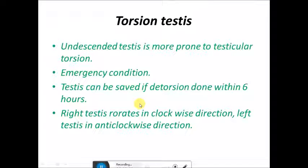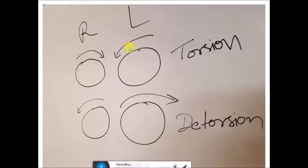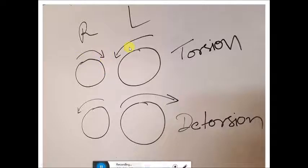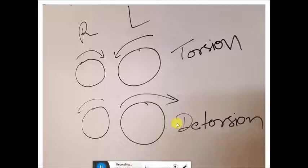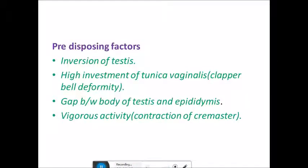The right testes rotates in a clockwise direction while the left testes rotates in an anti-clockwise direction. When the patient is in lithotomy position, during surgery the testes are derotated — the right one in anti-clockwise direction and the left one in clockwise direction — and then fixed using three-point fixation in the dartos space.